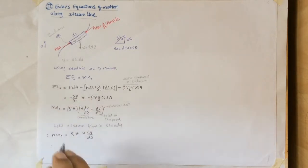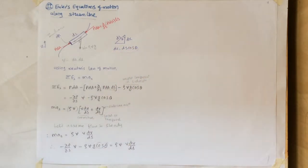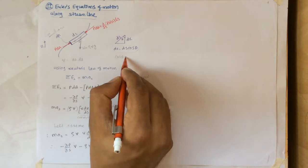Therefore after putting these two terms into equation we get minus dp/ds times volume minus rho volume g cos theta equals to rho volume times v dV/ds. And this cos theta from the triangle we can have here. As dz equals to ds cos theta, cos theta will be dz/ds.